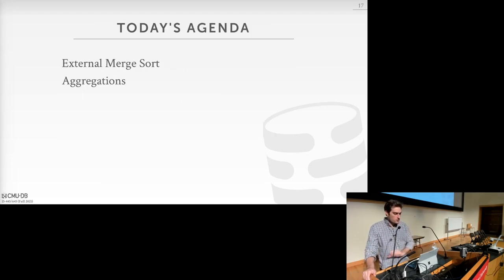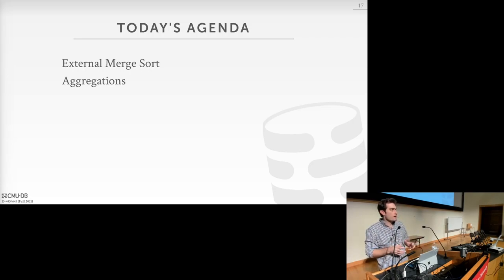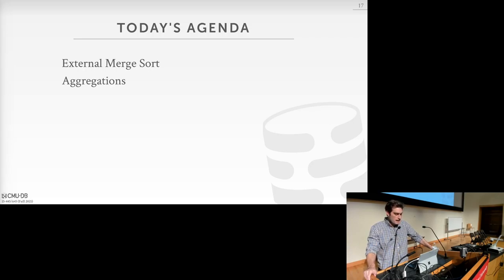Today we'll talk about external merge sort — a sorting algorithm for data larger than memory — and different aggregation operations. We'll see how high-level divide-and-conquer strategies can be designed and applied to different types of operators. This will also segue into the next class, where we'll discuss hash-based methods as an alternative to sorting.